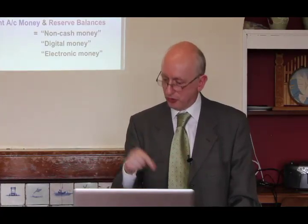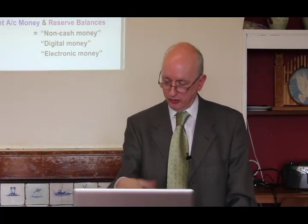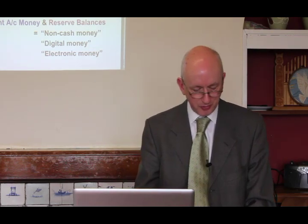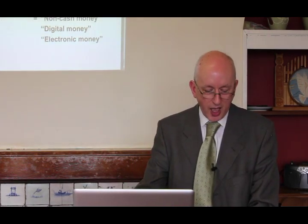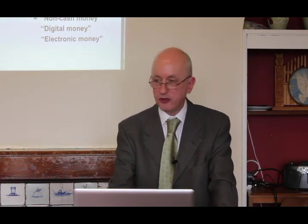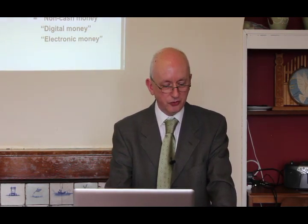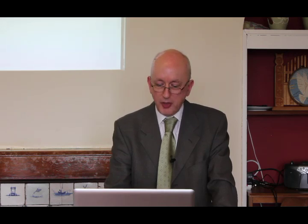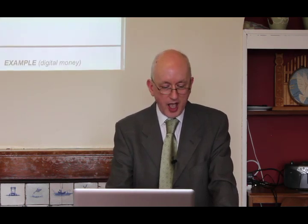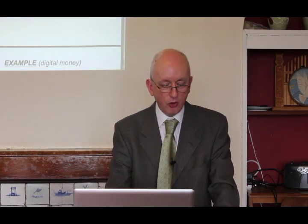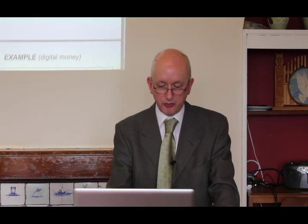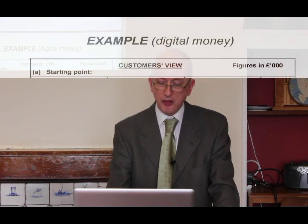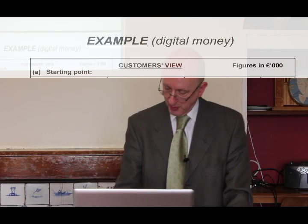Banks have been having entries written with quill pens, so the system's been on the go for a lot longer than the computers have. We're going to look at a very simple case to see how current account money is created and used. We're going to be ignoring cash and just looking at the two forms of digital money, and we're ignoring interest on loans for the sake of simplicity. We're going to be looking from the customer's point of view, and then go through it again looking at it from the bank's point of view.